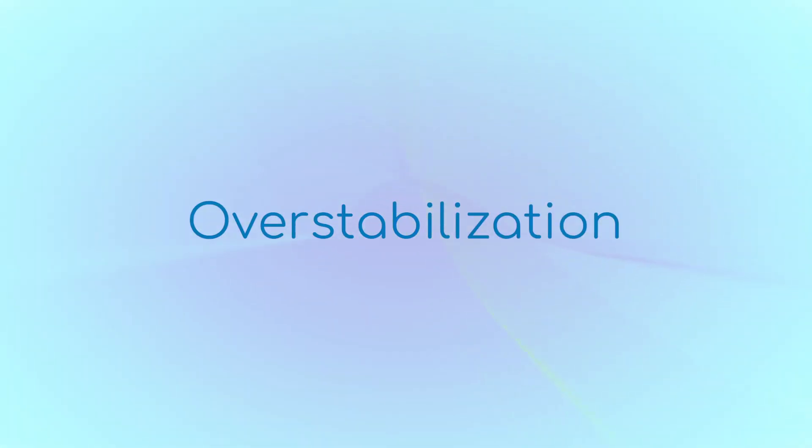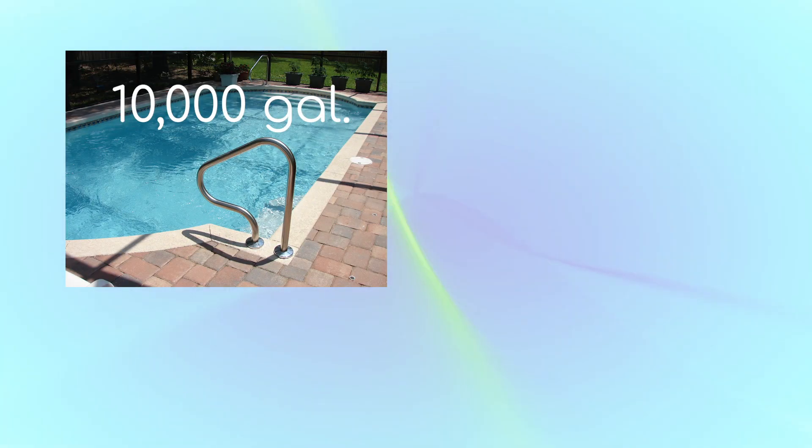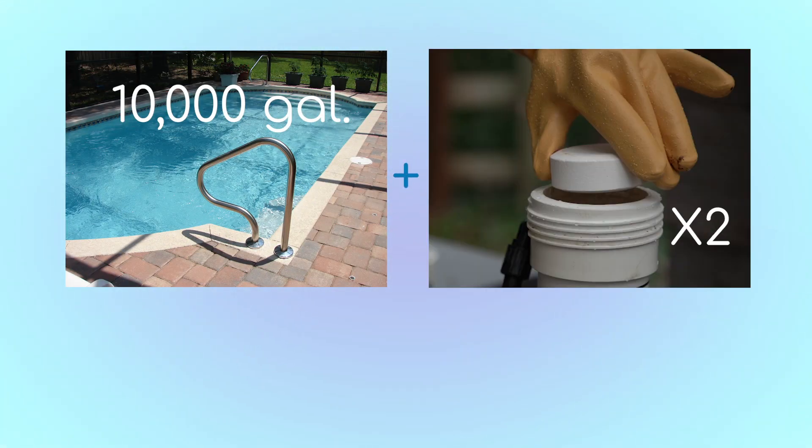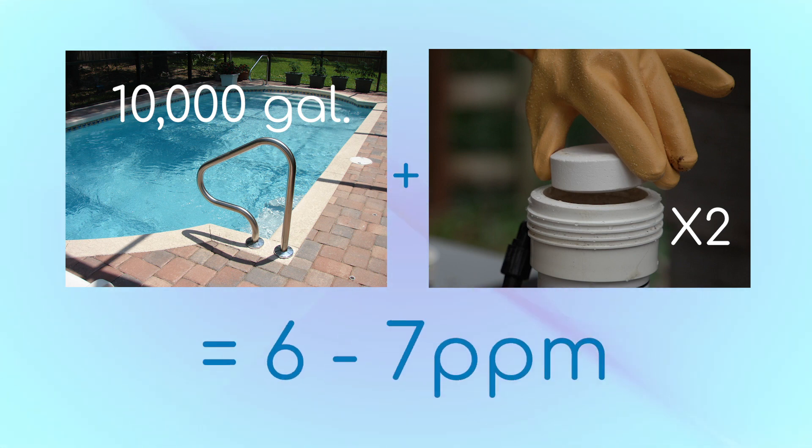Over-stabilization is a problem that can occur when using stabilized chlorines like dichlor and trichlor. These forms of chlorine are more than 50% cyanuric acid and increase CYA at a fairly alarming rate. For example, in 10,000 gallons of water, just one pound of dichlor or trichlor raises CYA six to seven parts per million.